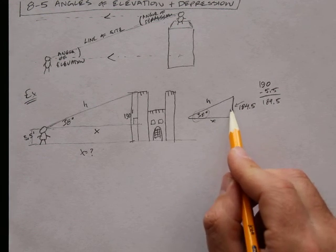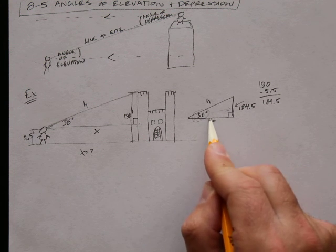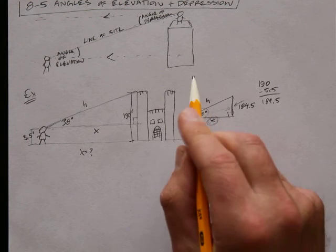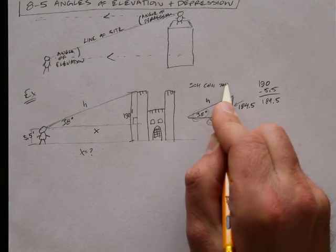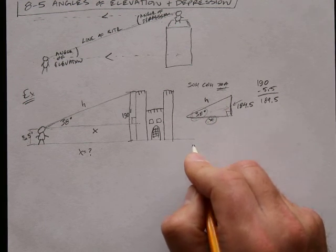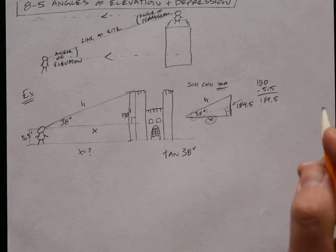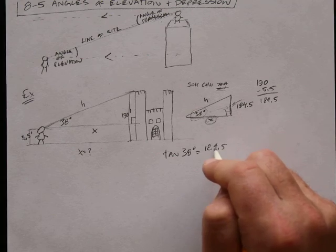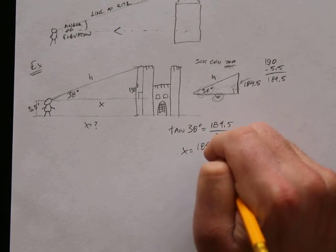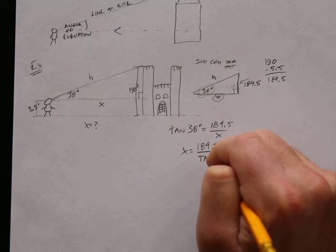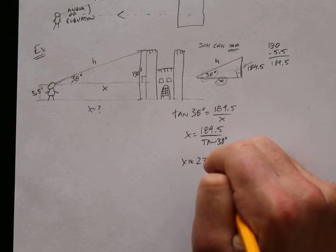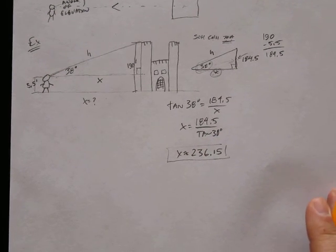So now I have this angle. I have this opposite side. This is 90 degrees. But I need to know the adjacent side. So the adjacent side is the one next to the angle that's not the hypotenuse. So I have opposite and adjacent. So remember, soh-cah-toa, opposite and adjacent. Opposite, adjacent. So I want tangent, opposite and adjacent. So tangent of 38 degrees equals opposite, 184.5, over adjacent, which is x. Use my fancy algebra here to switch x and tangent of 38 degrees. And if I plug all of this stuff into my calculator, I get x is approximately 236.15.